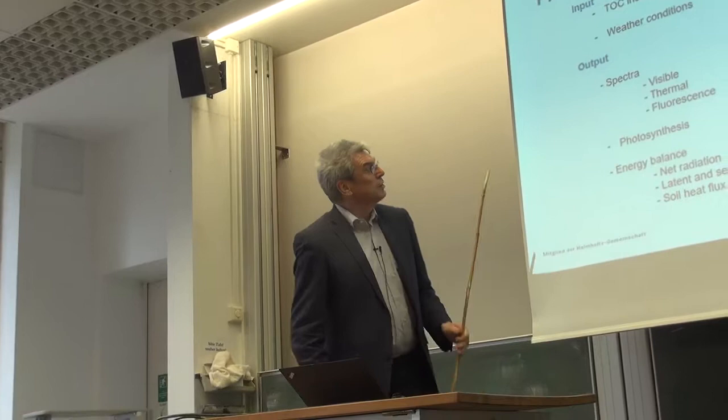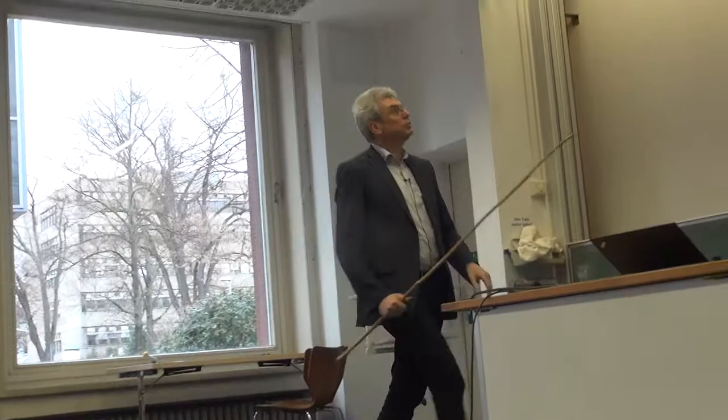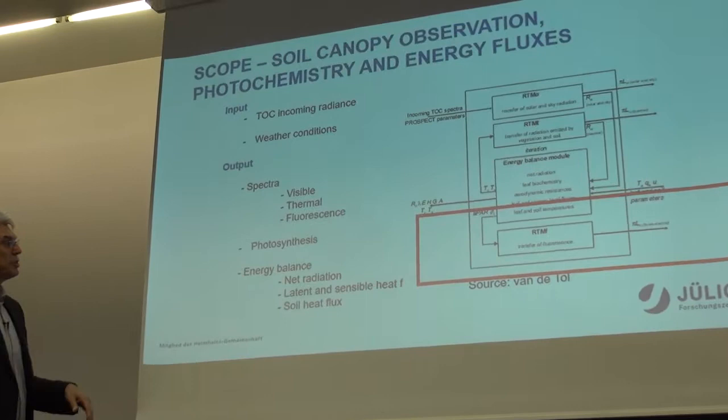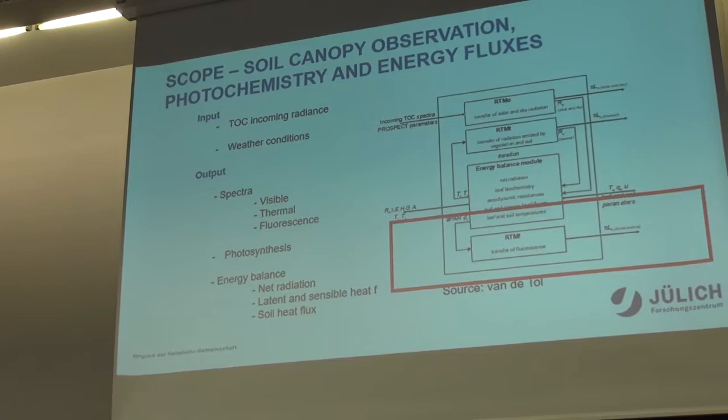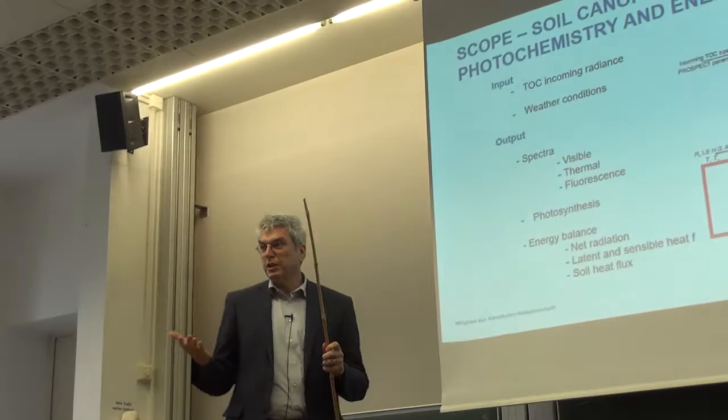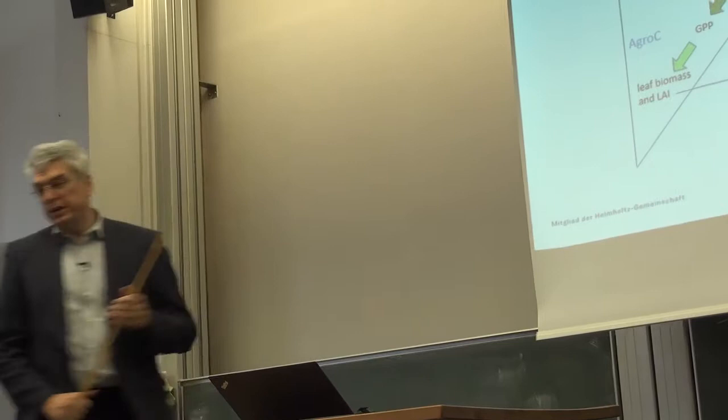The SCOPE model — top-of-canopy incoming radiation and weather conditions are inputs — produces through a cascading process a forward-mode calculation of fluorescence. We will use the radiative transfer model part of SCOPE for fluorescence and couple it with AgroSea. This is ongoing work — not yet finished.